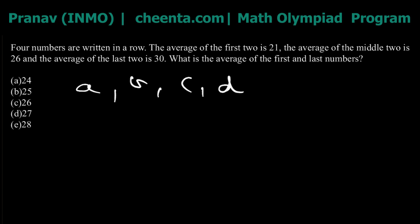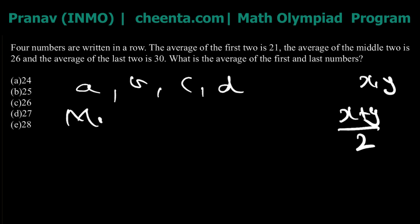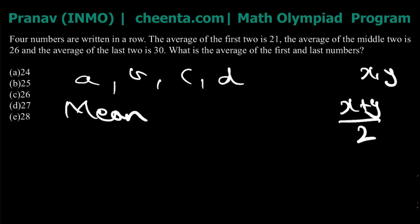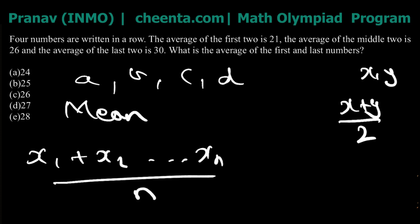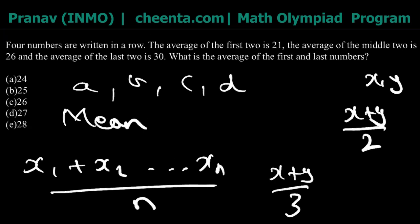They've told us the average of the first two is 21. What is an average? If the two numbers are x and y, the average is (x + y) / 2 — that's essentially what an average means. This is also called the mean, or arithmetic mean. The mean of n terms is the sum of n terms divided by n. The arithmetic mean of two numbers x and y is (x + y) / 2, of three numbers it's (x + y + z) / 3, and so on.